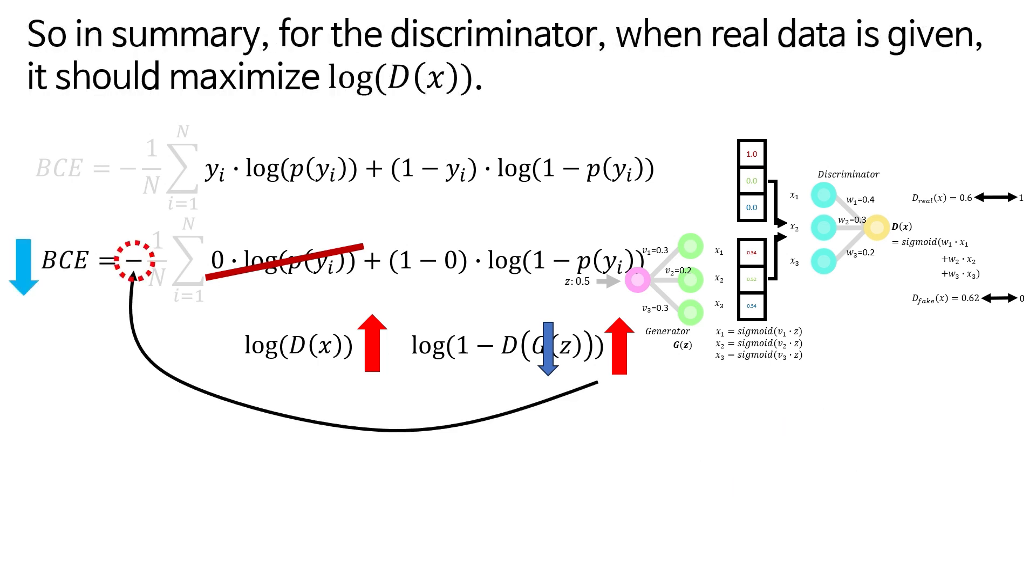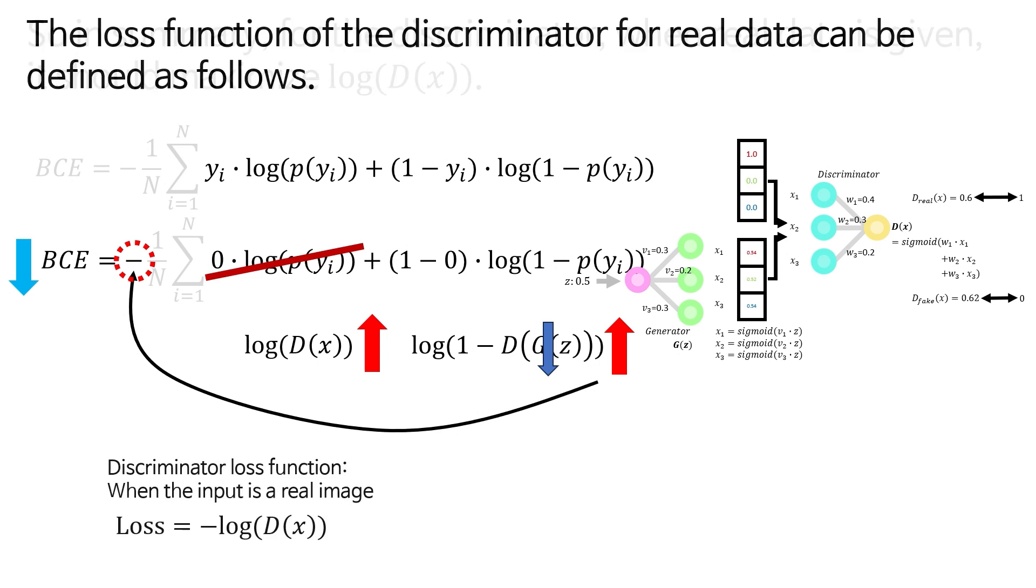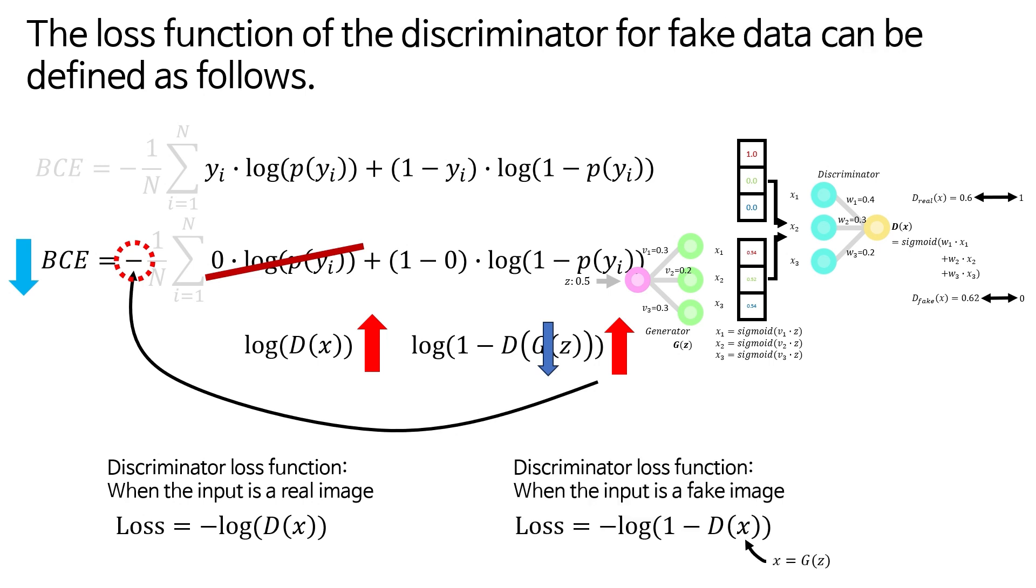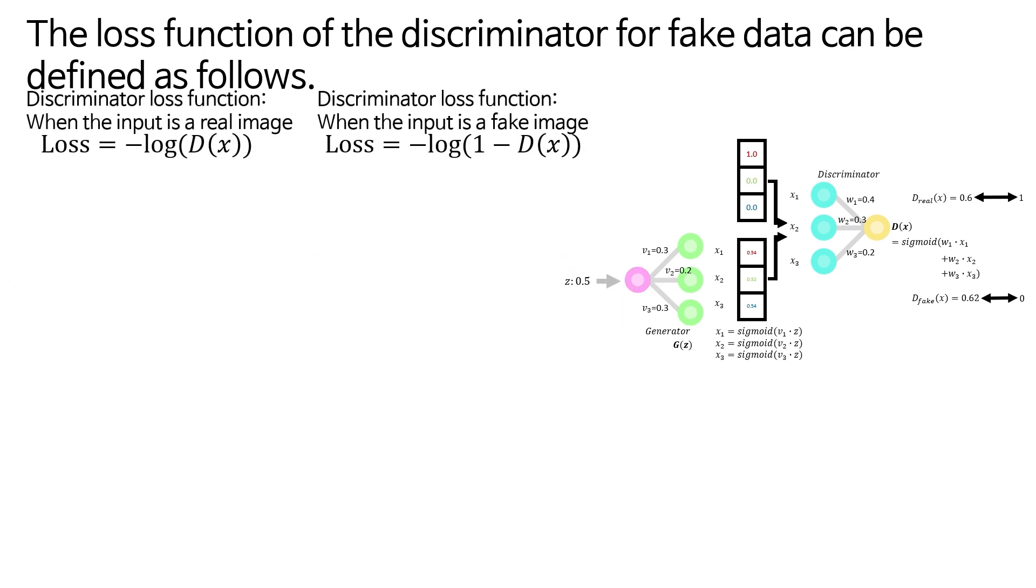So in summary, for the discriminator, when real data is given, it should maximize log D(x). The loss function of the discriminator for real data can be defined as follows. The loss function of the discriminator for fake data can be defined as follows.